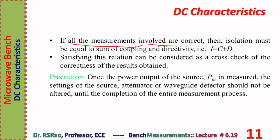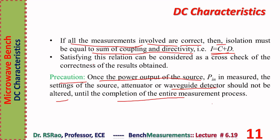If all measurements are correct, then isolation must equal the sum of coupling and directivity — this serves as a cross-check. If I = C + D, it indicates that the measurements were done properly following correct procedures. Precaution: once the output power of the source P_in is measured, the settings of the source, attenuator, or waveguide detector should not be altered until the completion of the entire measurement process.